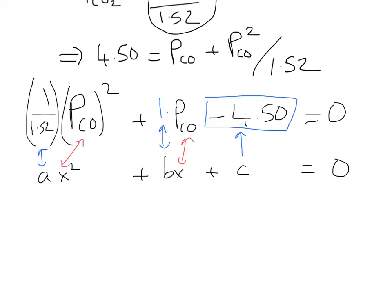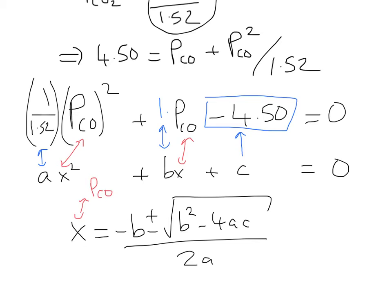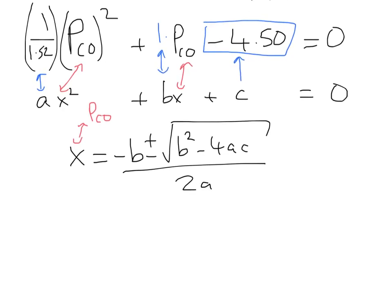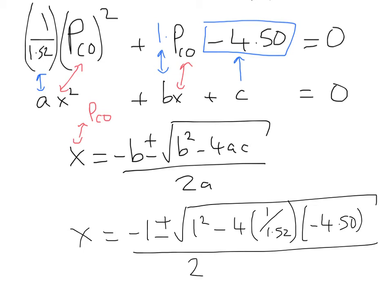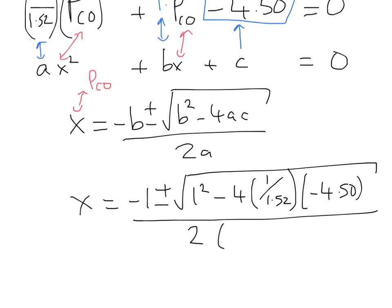So we can solve this using the quadratic equation. So X equals minus B, plus or minus, and so on, B squared minus 4AC over 2A. And remember, X is the partial of CO. So we can go ahead and solve this. We can just plug those values in. So we are going to get X equals minus B, so that's minus 1, plus or minus root B squared, so that's 1 squared minus 4 times A. A is 1 over 1.52 times C. C is minus 4.5, and we're square rooting all of that and dividing it by 2 times A. A is that 1 over 1.52.